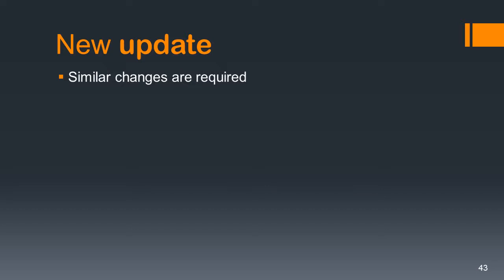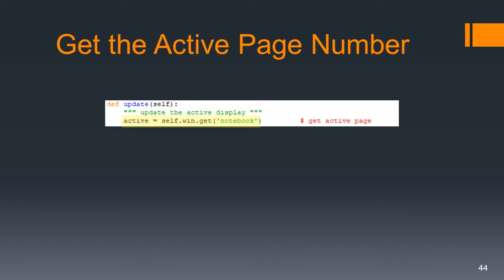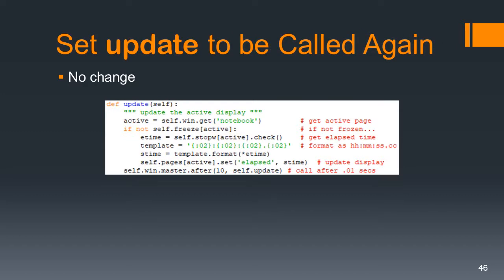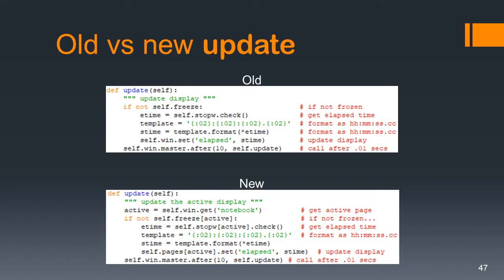The update method needs similar changes as well. We get the active page number — that's a useful bit of code to copy and paste. The code is similar except instead of self.freeze, we have self.freeze[active]; instead of self.stopw, it's self.stopw[active]; and at the bottom, self.pages[active]. All you had to do was add that active part to the existing code. The self.win.master.after call is unchanged. The old versus the new shows it's not as extensive as you might have thought — this is the advantage of writing modular object-oriented code.